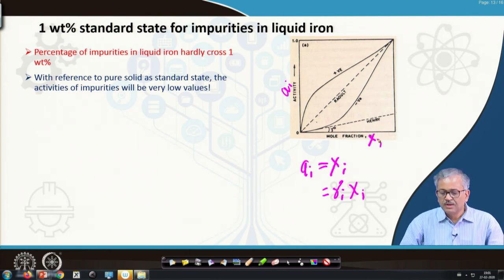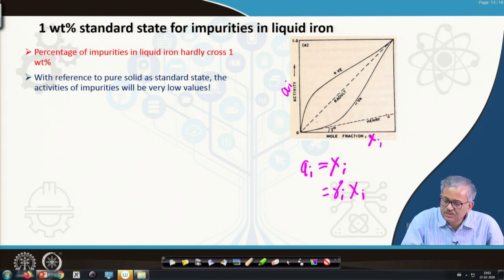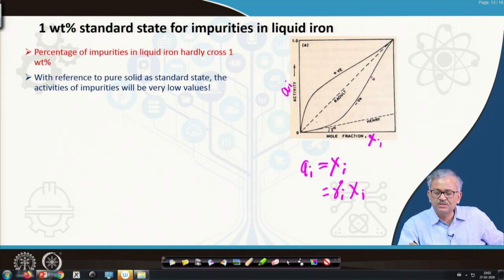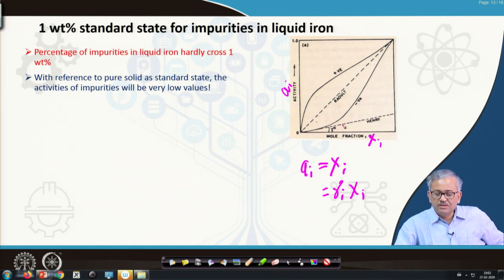At infinite dilution, another straight-line relationship exists — Henry's law. In very dilute solution, activity is again directly proportional to mole fraction. While gamma is continuously changing with composition in general, in the infinite dilute solution range, gamma is constant. This constant gamma is called the Henry's law activity coefficient, and the straight-line region is called the Henry's law line.